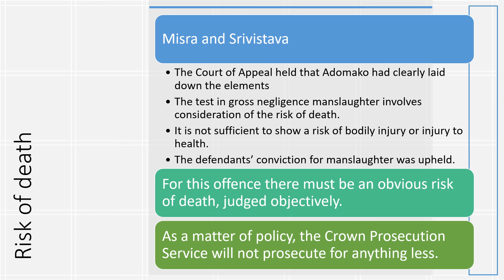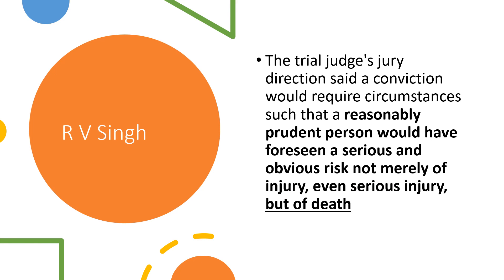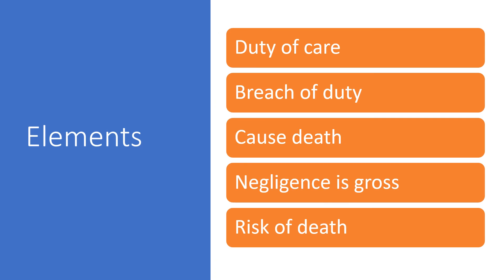For this offence, there must be an obvious risk of death, judged objectively by the jury. As a matter of policy, the Crown Prosecution Service will not prosecute for anything less than an obvious risk of death. In Singh, the trial judge directed the jury that a conviction would require circumstances in which a reasonably prudent person would have foreseen a serious risk not merely of injury but of death. All five elements must be proven for a conviction of gross negligence manslaughter, which carries a maximum sentence of life imprisonment.